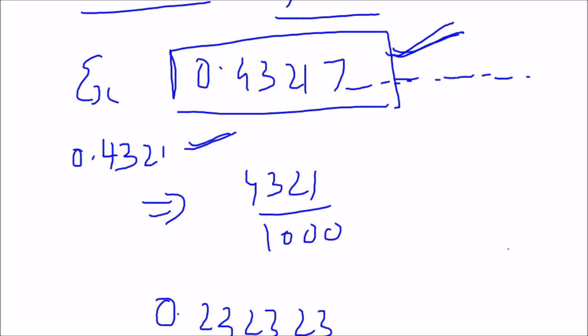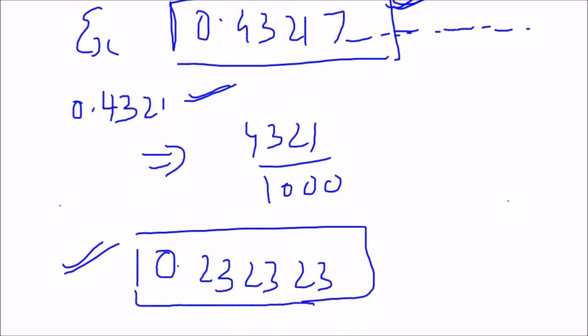There might be some queries about how rational numbers can be written as fractions from repeating decimals. I've made a separate video explaining how to convert repeating and non-terminating decimal numbers into a fixed rational number in the form of P by Q. The link is visible on your screen right now, or you can find it in the description below if annotations are turned off.